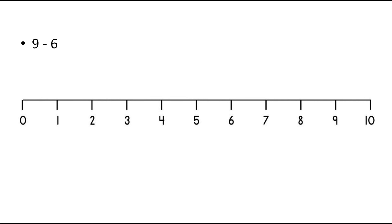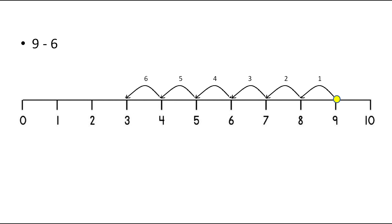The next one is 9 minus 6. We will point out on the first number that is 9 and then we will move 6 steps towards left. The first step will be on 8, the second step is on 7, third step is on 6, fourth step is on 5, fifth step is on 4 and sixth step is on 3. As we have reached on the number 3, the answer of 9 minus 6 is 3.